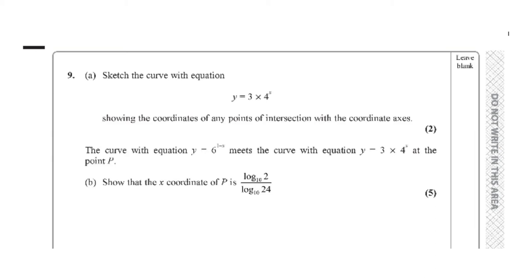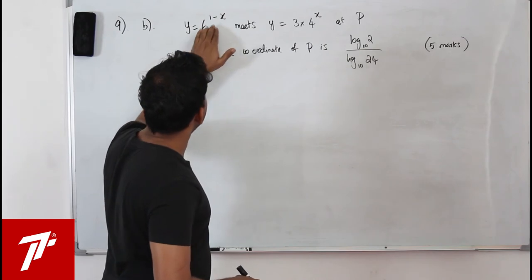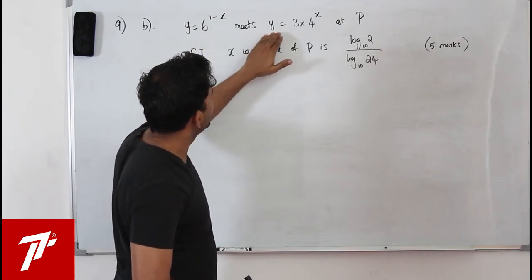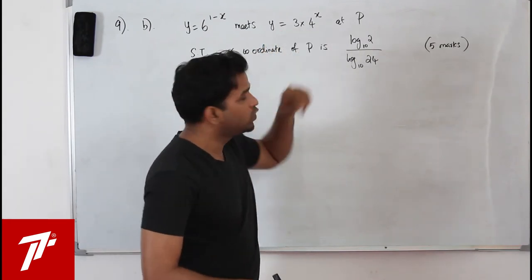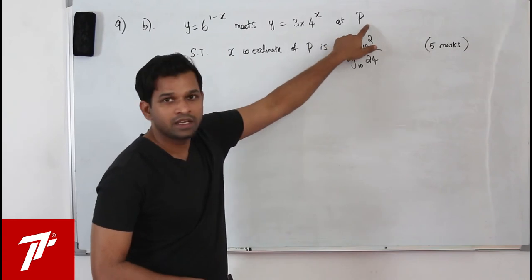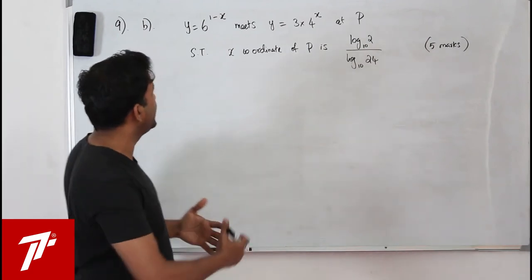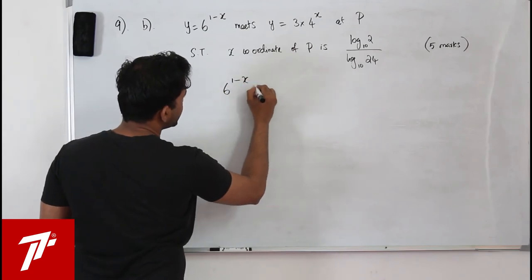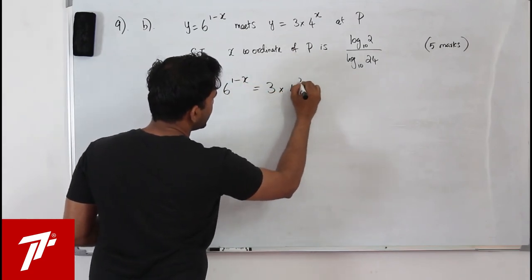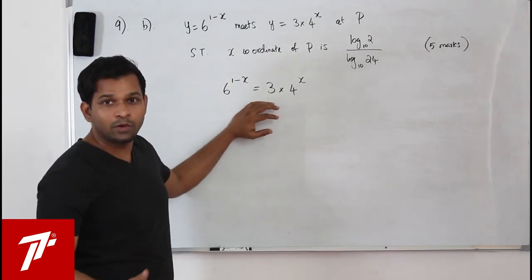Part B: the curve y = 6^(1 minus x) meets y = 3·4^x at point P. Show that the x-coordinate of P is log 2 / log 24 (base 10). This has five marks. To find the intersection, equate the two equations: 6^(1 minus x) = 3·4^x.